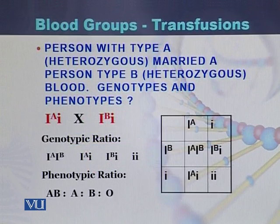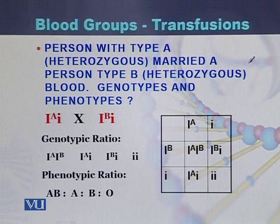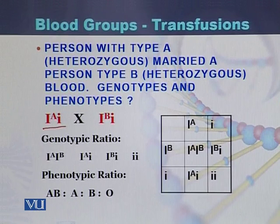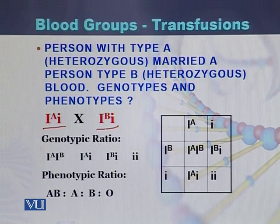Now let's check some crosses based on blood groups. If a person who has blood group type A in heterozygous form — with one allele A and the other allele O (written as small i) — marries a person who has blood group type B, also in heterozygous form, what will be the genotypes and phenotypes of their children?